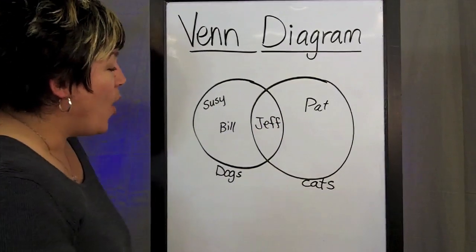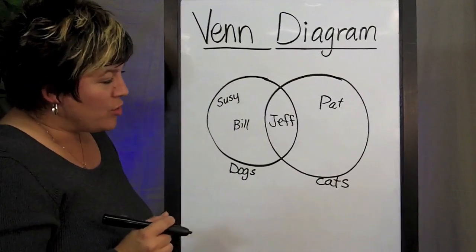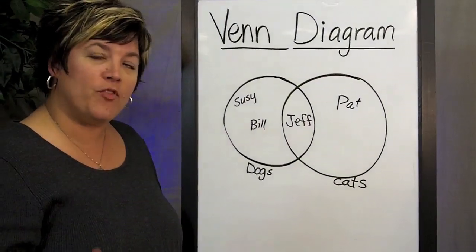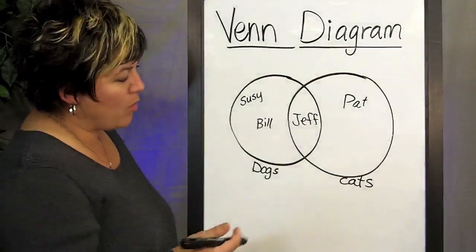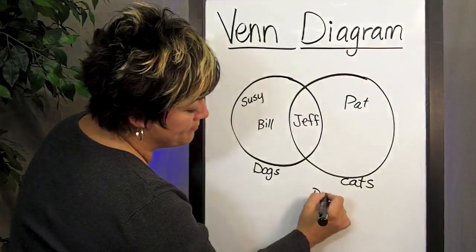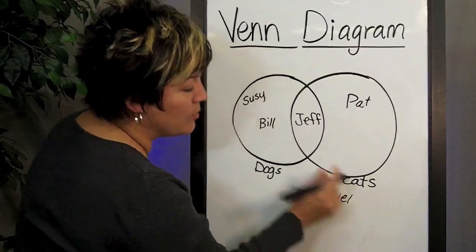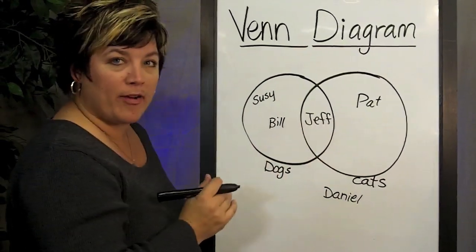And then we've got Daniel, who says, well, I don't like cats or dogs, I like fish. So where would his vote go? His would actually go out here, outside of the two circles that we're comparing things.